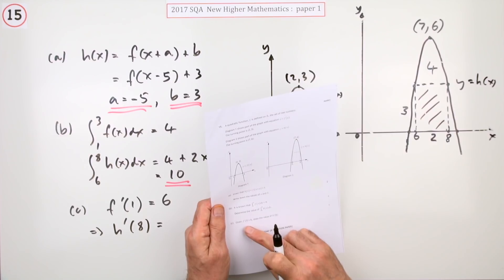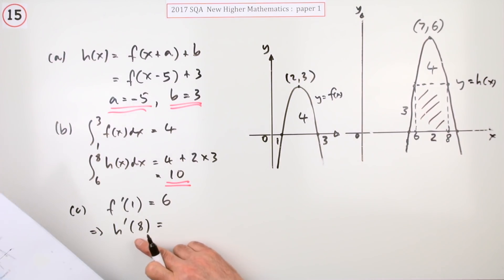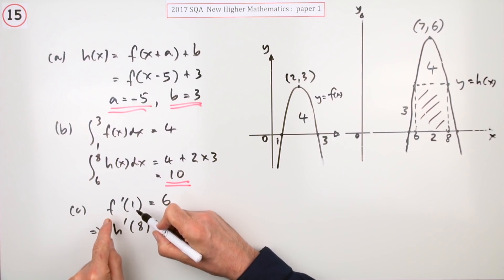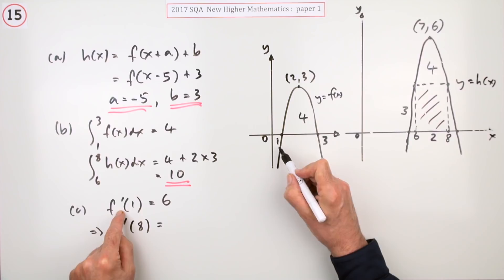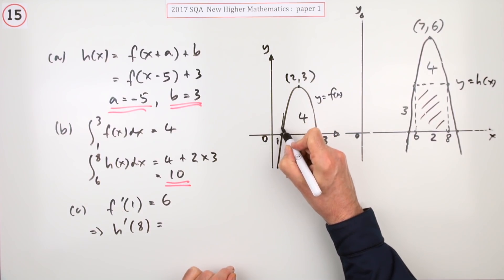And the last part, given that f'(1) is 6, what's the value of h'(8)? Well f'(1) means the gradient, the derivative on this graph at 1 is 6. That's this gradient here, this steep gradient, a gradient of 6, one along, six up.